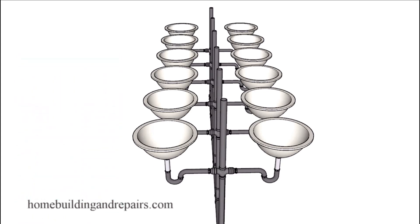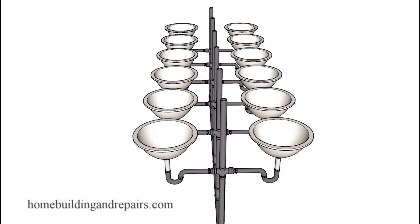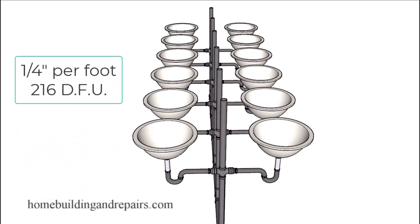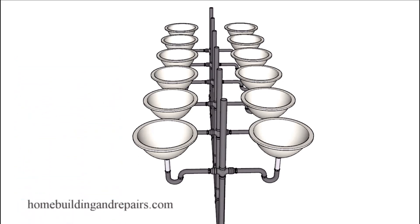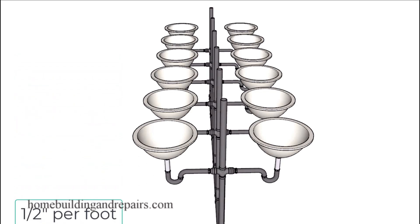And even that might not sound like that big of a deal. However, if we go to a four inch pipe and we slope it at an eighth of an inch per foot, we can have 180 drainage fixture units. A quarter inch per foot gives 216, and at a half inch per foot we can add another 70 fixture units, for a grand total of 250 drainage fixture units. Now that's a big number, and that's achieved by increasing the slope from an eighth of an inch per foot to a half of an inch per foot.